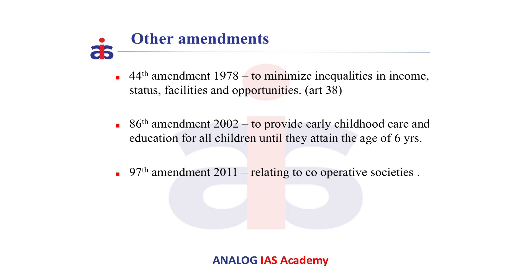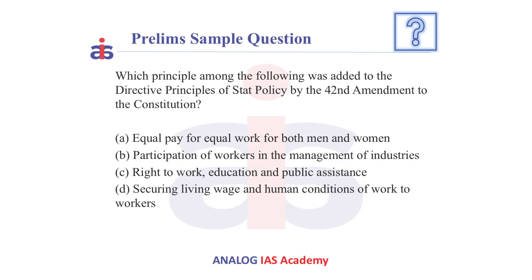This requires the state to provide early childhood care and education for all children until they complete the age of six years. The 97th Amendment Act of 2011 added a new directive principle relating to cooperative societies. It requires the state to promote voluntary formation, autonomous functioning, democratic control, and professional management of cooperative societies.